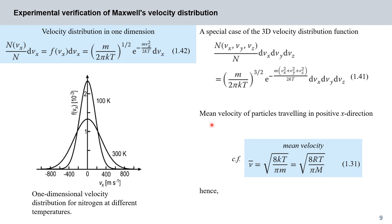Because of the isotropy of space and the multiplicative property of probability, we get the velocity distribution in one dimension as equation 1.42, eliminating the vy and vz terms. Corresponding expressions along the y- or z-axis follow by substituting vy or vz as needed. We would arrive at equation 1.42 directly by using the density of states for a one-dimensional gas in equation 1.41.